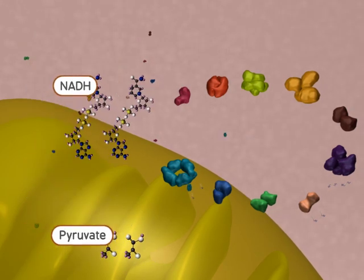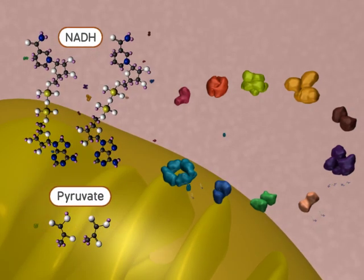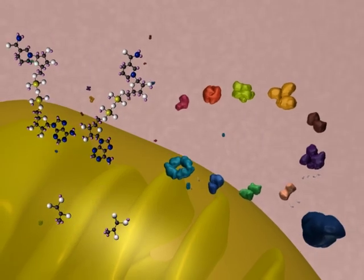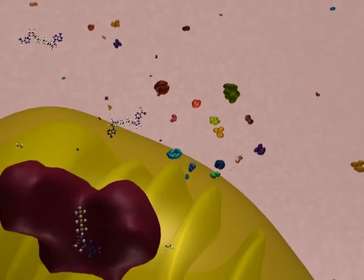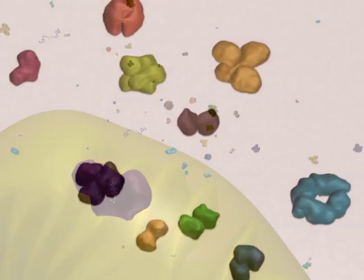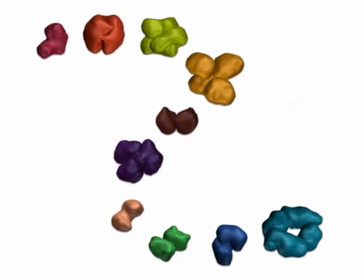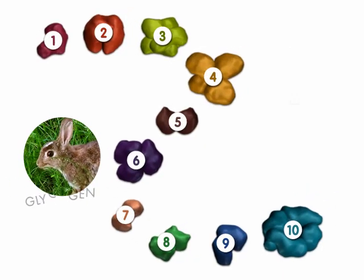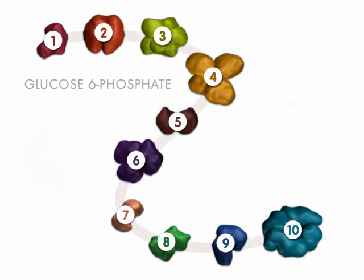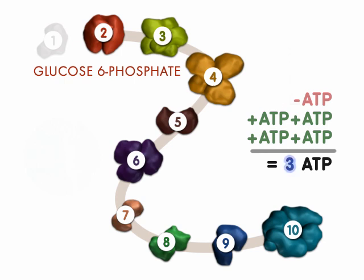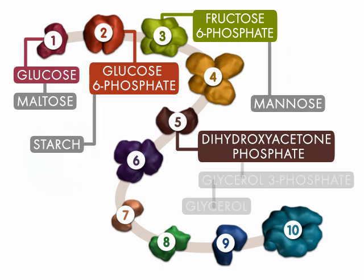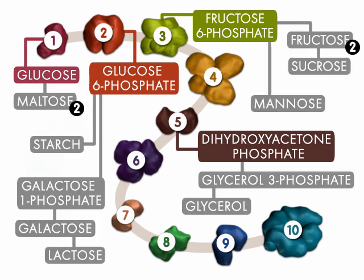The pyruvates and NADHs could be used in aerobic respiration to produce more energy for the cell. Here we depict glycolysis as a closed process, but in cells, substrates produced by other reactions can enter glycolysis at different points. For example, when an animal breaks down glycogen, glucose-6-phosphate is produced and can enter the glycolysis pathway at the second step, meaning one less ATP is required because the first ATP-consuming step is skipped. Other sugars can also enter the glycolysis pathway at different points, each having a different effect on the net number of ATPs produced.